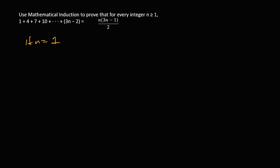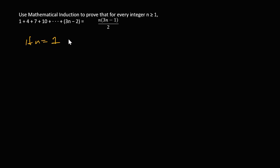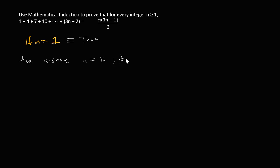From that we can confirm that if n equals one, then the statement is logically true. Now let's assume it is also true when n equals k.